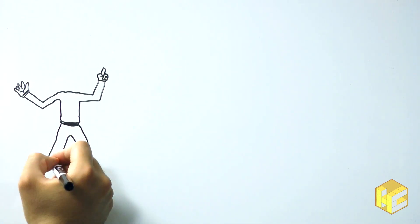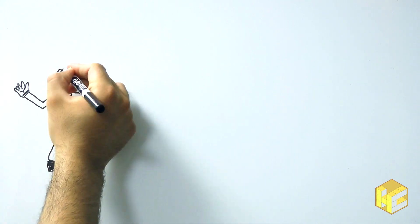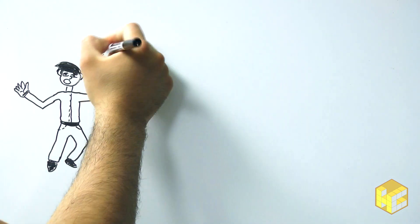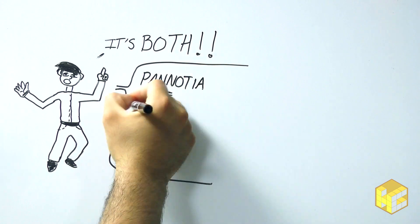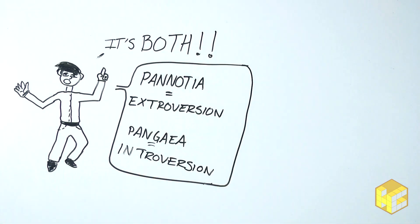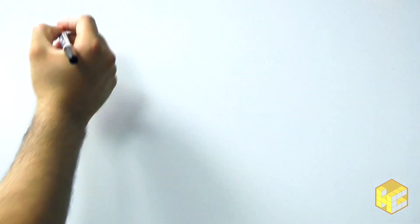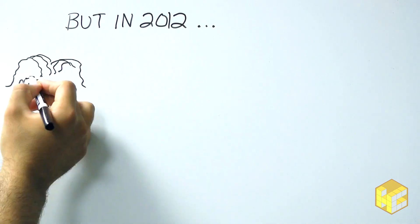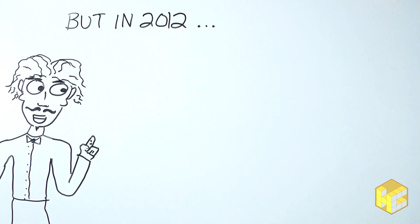Scientists hypothesized that supercontinents formed via both of these methods. For example, a publication in 2004 had Pangaea formed by introversion and Panosha formed by extroversion. That all got turned on its head by a new theory proposed by Ross Mitchell in 2012.